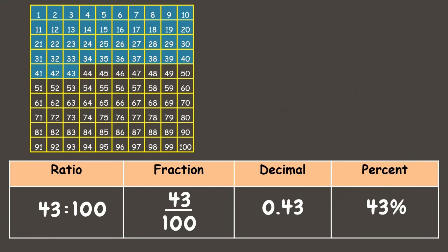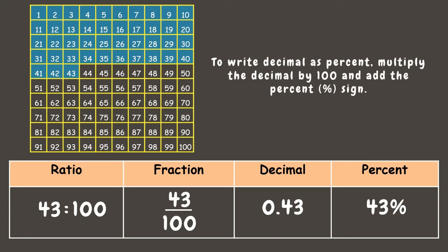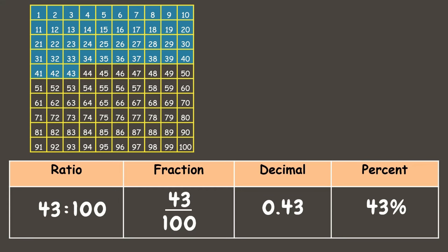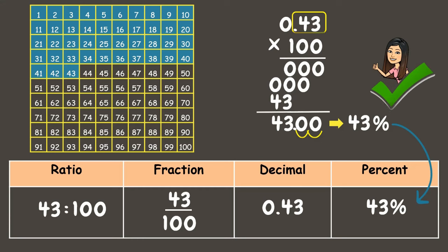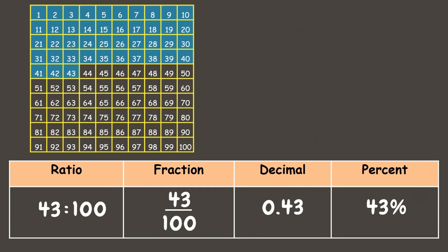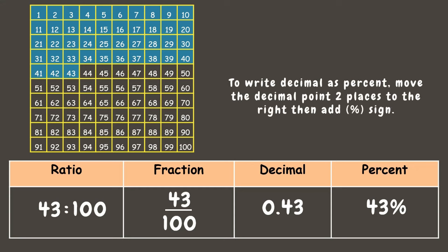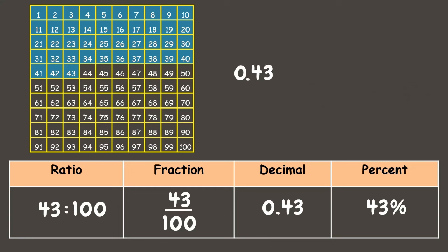To write a decimal as a percent, we can multiply the decimal by 100 and add the percent sign. For 0.43 (43 hundredths) times 100, since we have two decimal places, we move the decimal point two places, giving us 43 — add the percent sign for 43 percent. There is also a shorter way: simply move the decimal point two places to the right, then add the percent sign. So 0.43 becomes 43 percent.